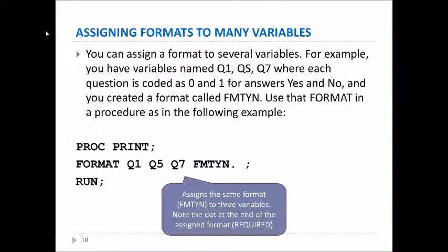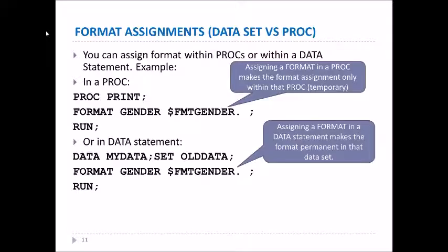For instance, in this example we're assigning the format FMT_YES_NO to three variables: Q1, Q5, and Q7. You could also use a range, so you could say something like FORMAT Q1-Q50 to assign that format to 50 variables at once.